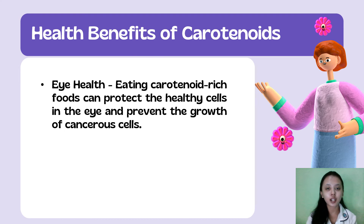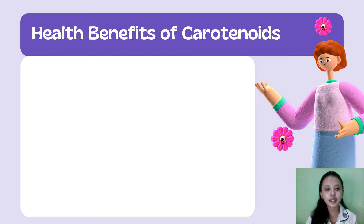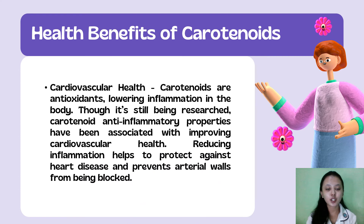Increasing the amount of lutein and zeaxanthin in your diet can also help slow current eye damage and prevent your condition from progressing. The next health benefit of carotenoids is cardiovascular health. Carotenoids are antioxidants that lower inflammation in the body. Though still being researched, carotenoid anti-inflammatory properties have been associated with improving cardiovascular health and protecting against heart disease.